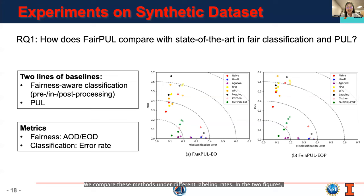We compare these methods under different labeling rates. In the two figures, the dots with higher transparency correspond to the results under lower labeling rates. The closer the dot is to the origin, the more fair and more accurate the model is. From the figures, we can see that for all the methods, their classification performances drop as the labeling rate decreases.